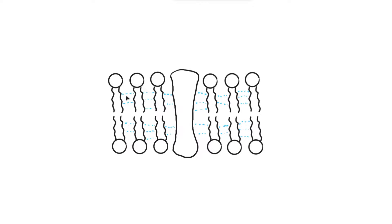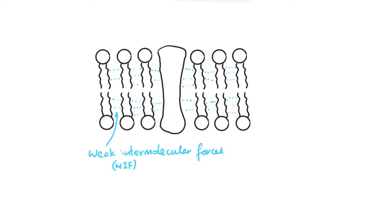In between the two fatty acid tails of different phospholipids we can find weak bonds called weak intermolecular forces. These can be things like London forces or van der Waals forces if you are studying A-level chemistry. Basically, they stabilize the entire structure — they hold the phospholipids in roughly the same place. The phospholipids can move around a little because it's a fluid model, but the intermolecular forces stabilize them.